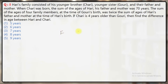There are 5 family members: father, mother, Hari, Chari, and sister Gauri. It's a simple question based on equations, so we'll frame equations here. Let's assume father's age is F, mother's is M, Hari's age is H, and Chari's age is C. Since Chari is 4 years older than Gauri, Gauri's age will be C minus 4. These are their present ages.